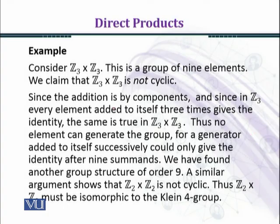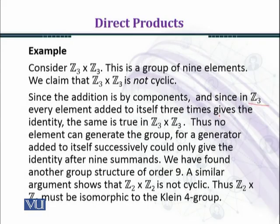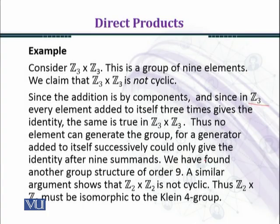Since addition is by components, and since in Z₃ every element added to itself three times gives the identity — because we are working under modulo 3 — for instance, adding 1 three times in Z₃ gives 3 ≡ 0. Thus every element of Z₃ × Z₃ has order dividing 3, so no element can generate a group of order 9. We have found another group structure of order nine.